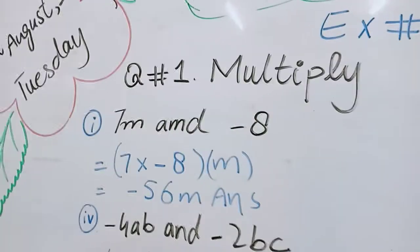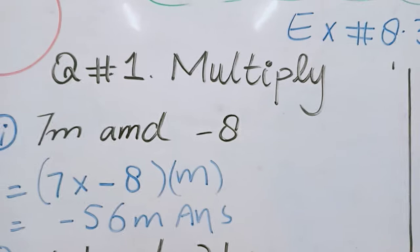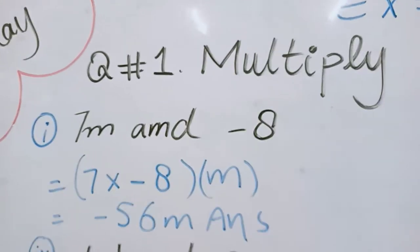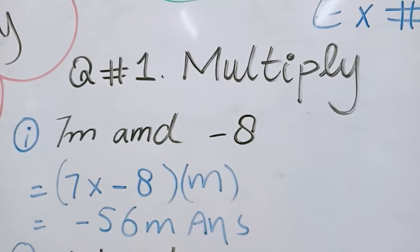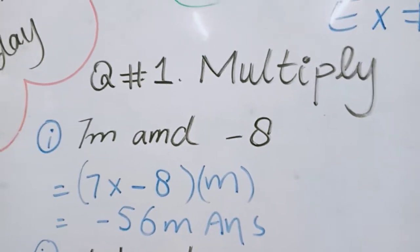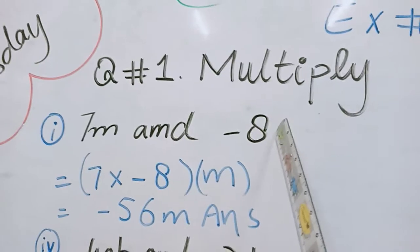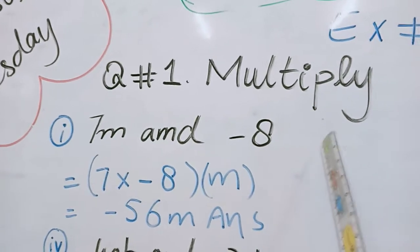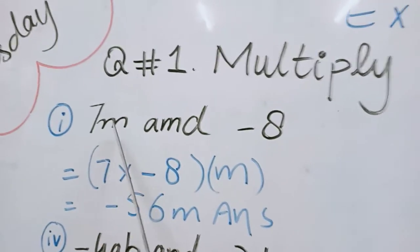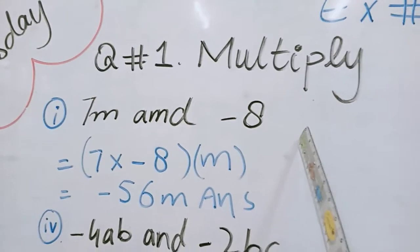In first question we have binomials. Monomial. What is binomial? Monomial has only one term. See students, 7m is separate value and minus 8 is separate. It means these two terms are two polynomials, single single term.